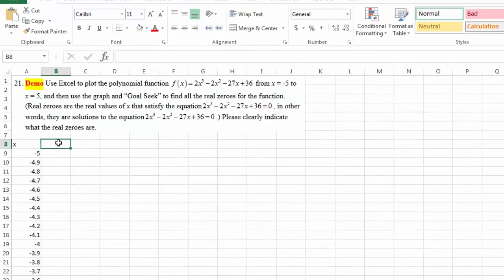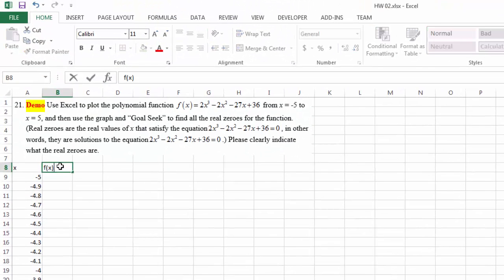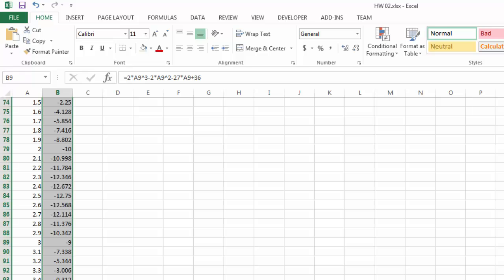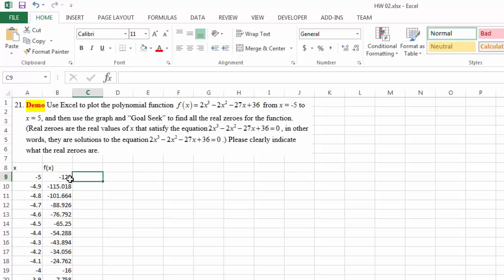And then the next thing to do is calculate the corresponding function value according to this function right here. And that equals to 2 times x raised to the third power minus 2 times x again raised to the second power minus 27 times x plus 36. And then we only need to drag this handle.